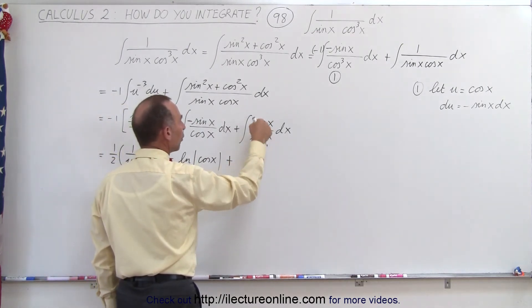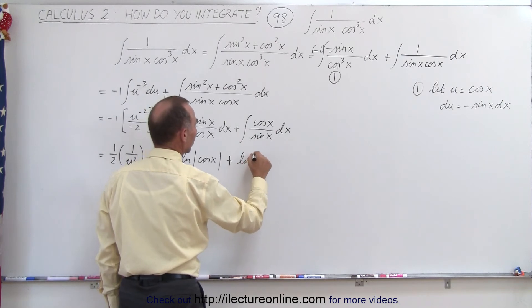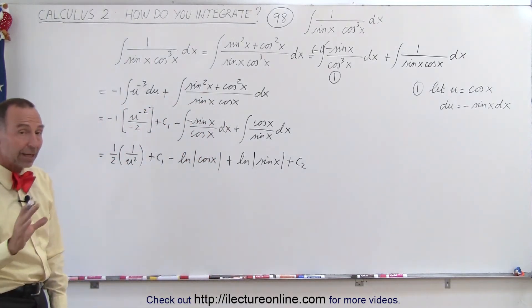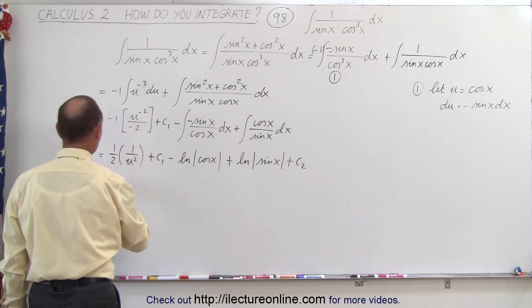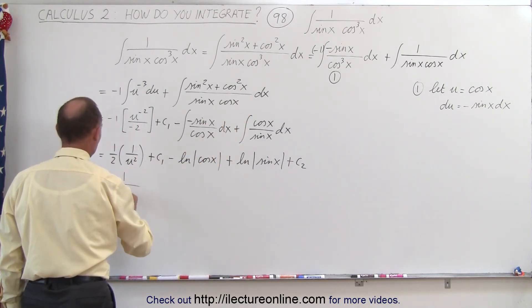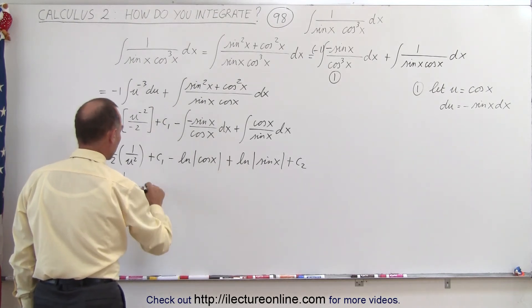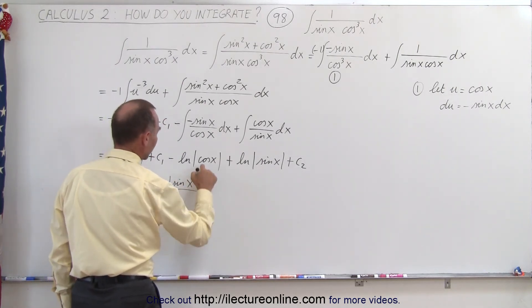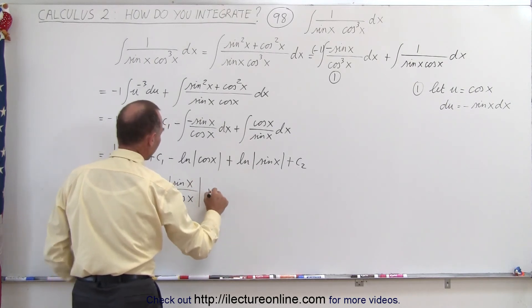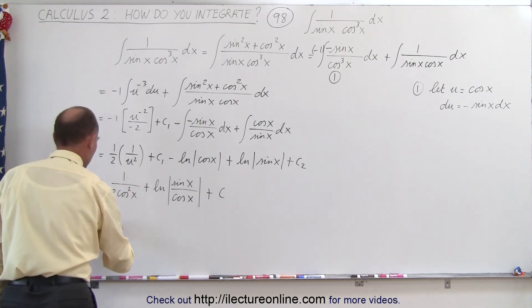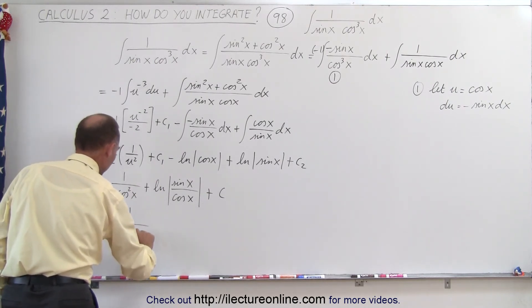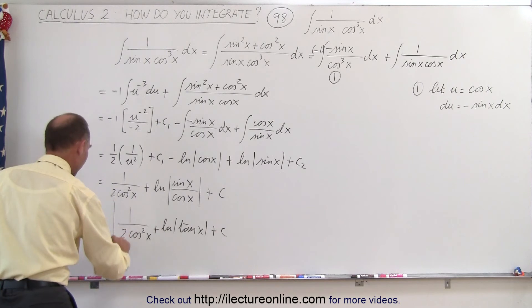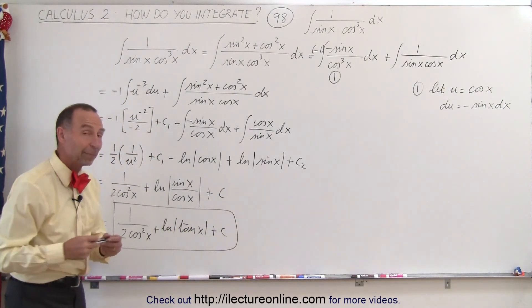We replace u by cosine of x, so this equals 1 over 2 times cosine squared of x, plus the natural log of sine of x over cosine of x, combining the two constants of integration as c. This reduces to 1 over 2 times cosine squared of x, plus the natural log of tangent of x, plus a constant of integration. That is the final result of this integral.